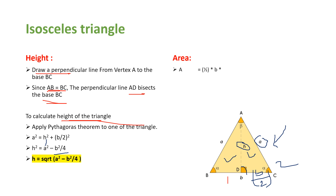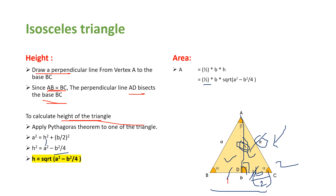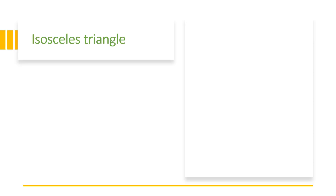The area of an isosceles triangle is (1/2) × base × height. The base b is given, and we found height using the Pythagorean theorem. So we substitute: area equals (1/2) × b × √(a² − b²/4). The key mechanism was drawing the perpendicular, using the bisection property, and applying the Pythagorean theorem to find the height.